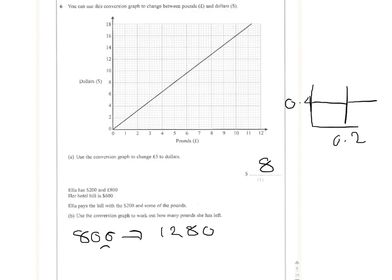If you're not quite sure how I did that, I've used the graph and said eight goes to twelve point eight. So eight hundred goes to twelve eighty. Now remember she also has two hundred dollars.